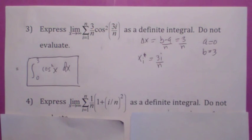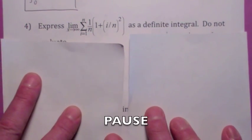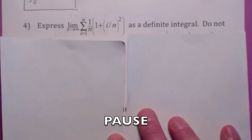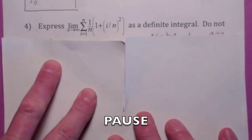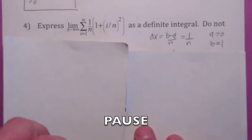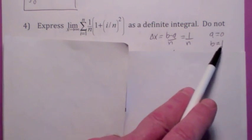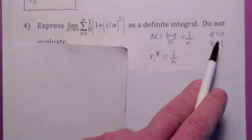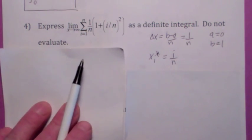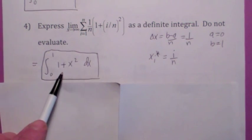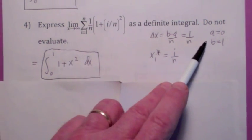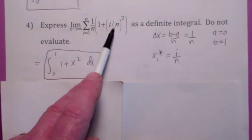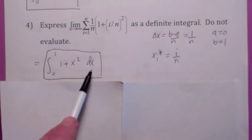Why don't you try this one? See if you can express this as a definite integral, assuming we're using right endpoints. Delta x is b minus a over n, which looks like 1 over n, so let's assume a is 0 and b is 1. x sub i star would be 0 plus i over n. Putting it all together, the integral goes from 0 to 1, and f of x looks like 1 plus x squared, giving you dx.